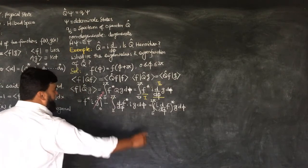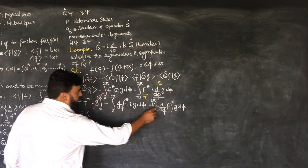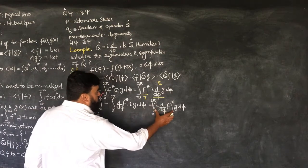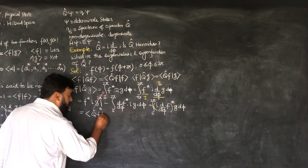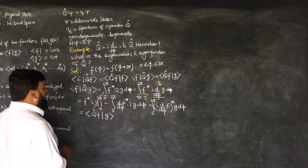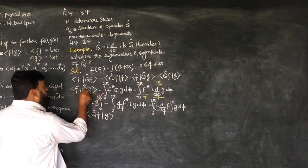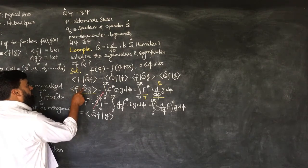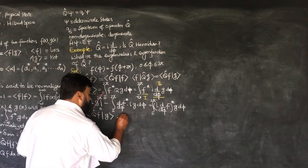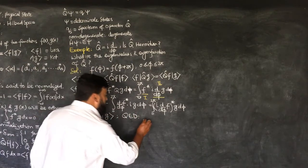Writing this in bracket notation: i·d/dφ is the Q operator, and with F* in bra form and G in ket form, we have shown that Q moves from the ket to the bra unaffected. This proves that Q is a Hermitian operator.